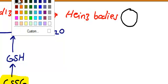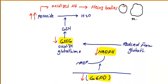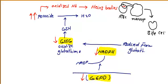Heinz bodies are a kind of intracellular inclusion bodies inside the red blood cells. In the periphery of the red blood cells, there are inclusion bodies full of hemoglobin. Macrophages will come and eat the hemoglobin out of the red blood cells. The end result of this process is a type of cell called bite cells. Bite cells are characteristic cells in cases of Glucose-6-Phosphate Dehydrogenase deficiency.